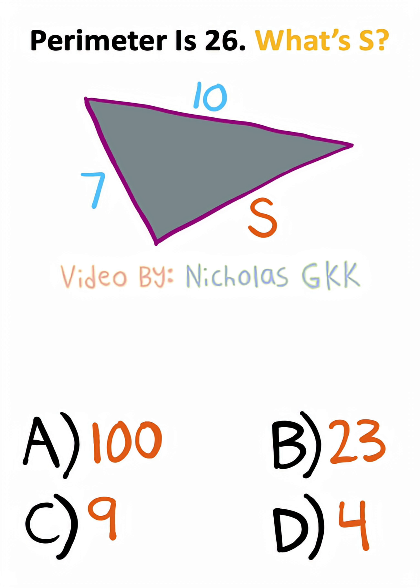For the last problem, we have the perimeter of a triangle given to us. The perimeter is found by just adding all sides of the triangle.